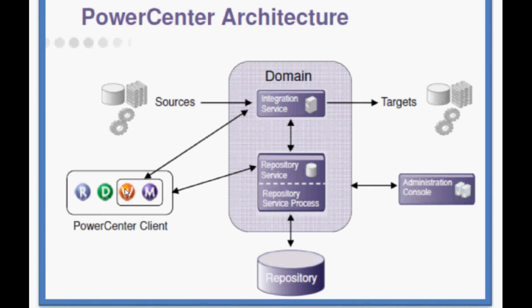The domain is the foundation — the basic administration unit. While installing Informatica, it asks for a database username and password. Once provided, the domain is created. After that, we add one node to the domain. A node is the logical representation of a physical machine. For example, if we install Informatica on our laptop, our laptop name is added to the domain as a node. The node acts as a gateway — it receives requests from clients and routes them to appropriate services. Each node runs a Service Manager that manages services on that node.